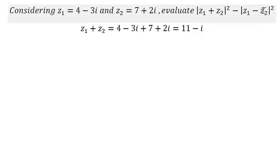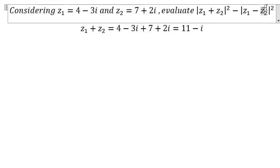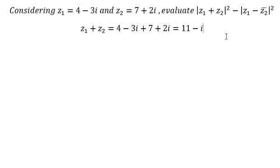The next one, z2 bar. In here we need to consider first, so that should be about 7 minus 2i. We change from positive to negative.